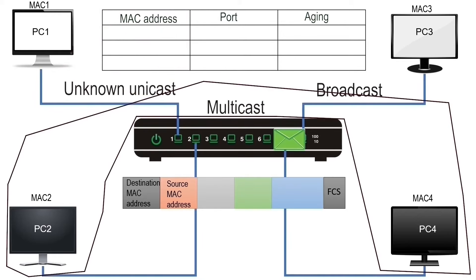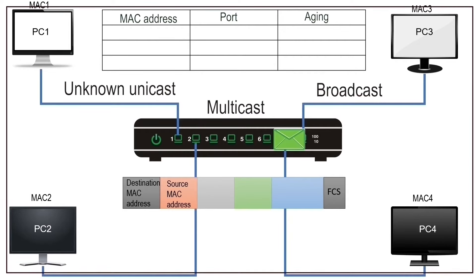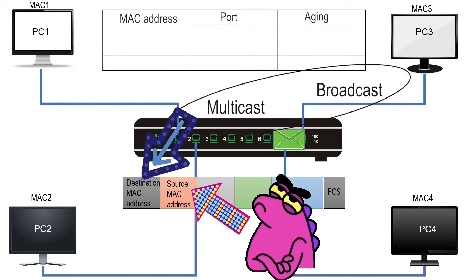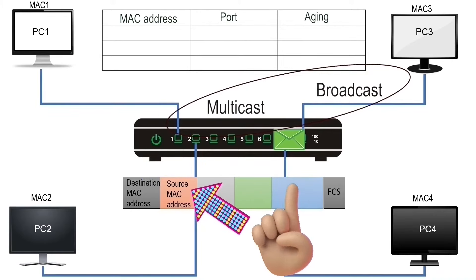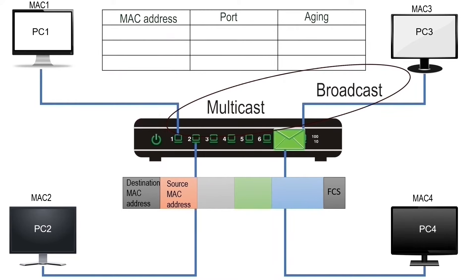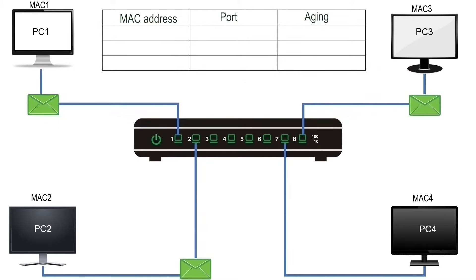A switch floods a frame if it has an unknown unicast, multicast, or broadcast address in the destination field. An unknown unicast address is one not available in the CAM table. A multicast address belongs to a group of devices; a broadcast address belongs to all devices on the local network. Multicast and broadcast are destination-only addresses and are never used in the source field, so a switch never learns them and always floods frames destined for these addresses.